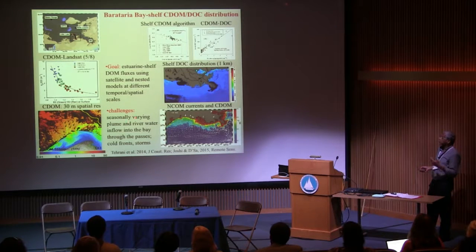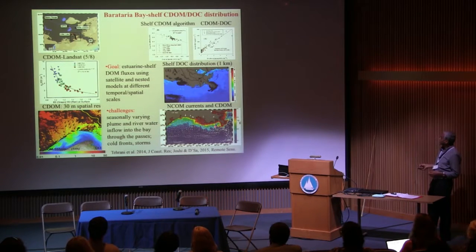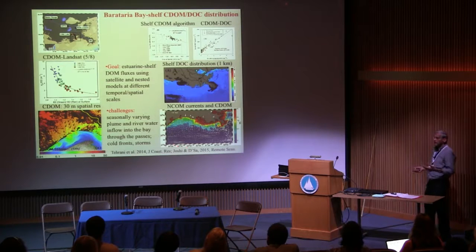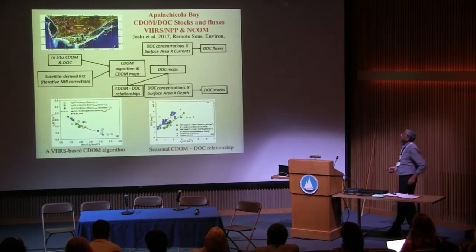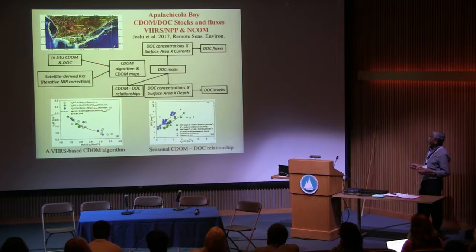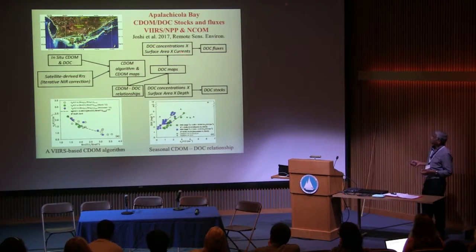The challenge is to look at seasonally varying plume and river water. An important consequence of having a large river outflow is that some of these plume waters can enter into these bays, which complicates the modeling aspect and the fluxes that can be calculated from these systems. The second part of our study was essentially looking at Apalachikola Bay, where we looked at both CDOM and DOC stocks and fluxes. This is a paper that has been published by Joshi et al. recently.